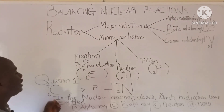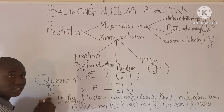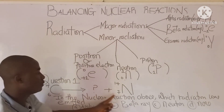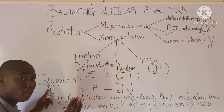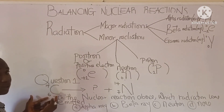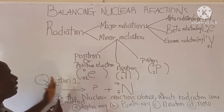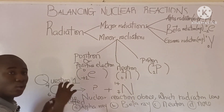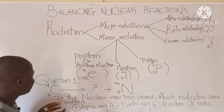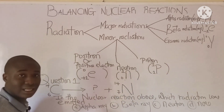To balance a nuclear reaction, there are some steps to follow. The superscript is the value up here, and the subscript is the value down here. For nitrogen here, the superscript is 14 and the subscript is 7. The superscript is also called the mass number, and the subscript is the atomic number. The superscript values on the left-hand side of the reaction should equal those on the right-hand side.